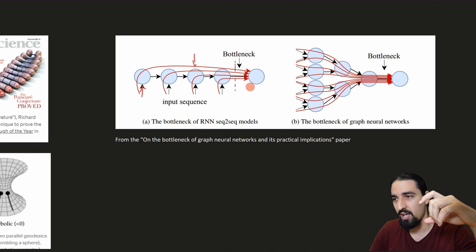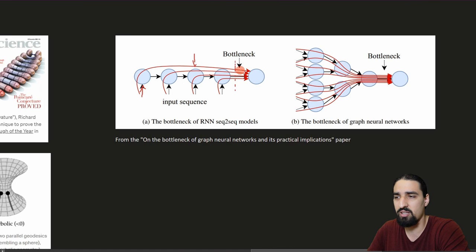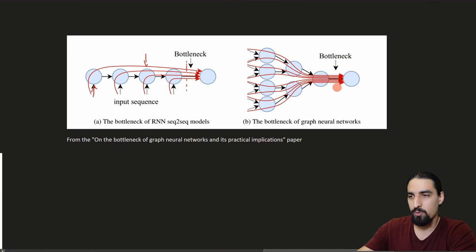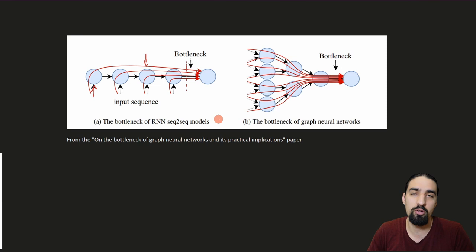RNNs were susceptible to this problem, and later models like LSTMs or GRUs managed to focus on some parts of the information more and others less, partially avoiding the bottleneck problem. With graph neural networks, the problem is even more severe. Compared to RNNs, we have exponentially more informational vectors coming in at every single step, because spatial GNNs work by aggregating the one-hop neighborhood.